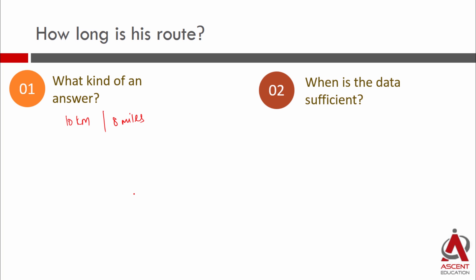When is the data sufficient? The data is sufficient when we are able to come up with a unique value for this distance. When data is sufficient and that number should be a unique number.